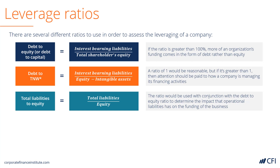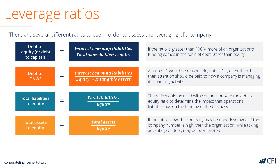Then we can look at total assets to equity. In this ratio, we take all of the assets and divide them by the equity. This is another way of assessing the leverage relative to assets. This ratio can also be used in conjunction with the debt-to-equity ratio in order to find the sweet spot with the right amount of leverage for the business.